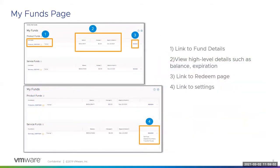You can see a list of all HPP funds on the My Funds page. From this page, you can access the settings, add additional fund users, transfer credits between HPP funds, and view details about the deposits made to each fund. Click on the fund name to access the fund details page, where you can download a report for all of the activity within each fund and download a report of all redemptions made against each fund.